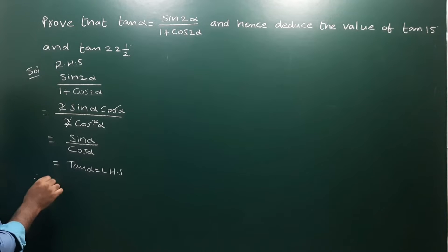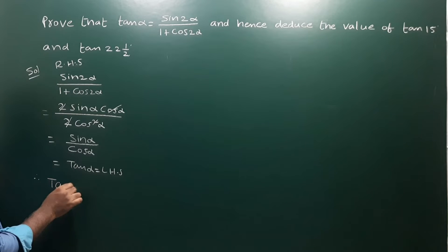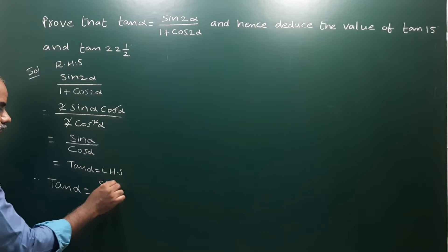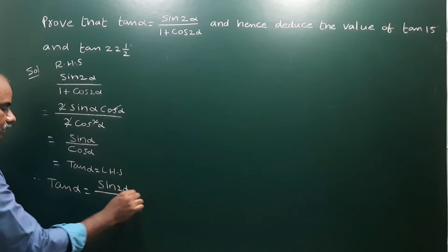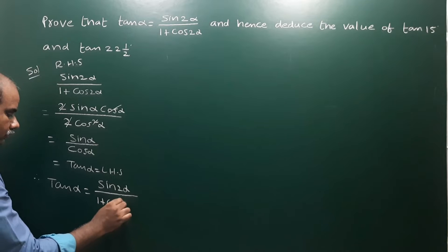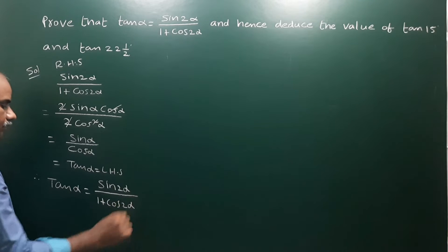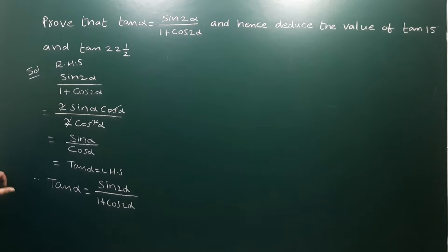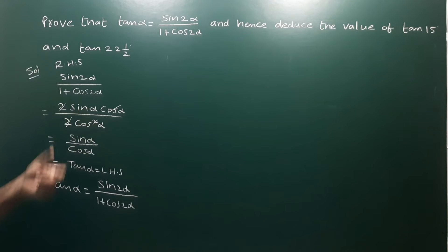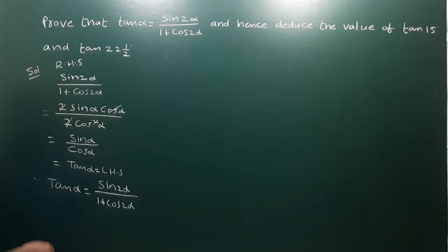Therefore the result is: tan α = sin 2α / (1 + cos 2α). By using this result, we have to find the value of tan 15° and tan 22.5°.